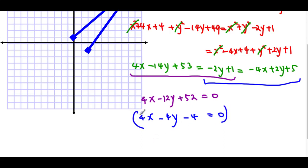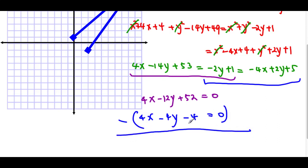We can subtract the equations to cancel out the x's. Then what we end up getting is −8y + 56 = 0, which gives us y = 7.